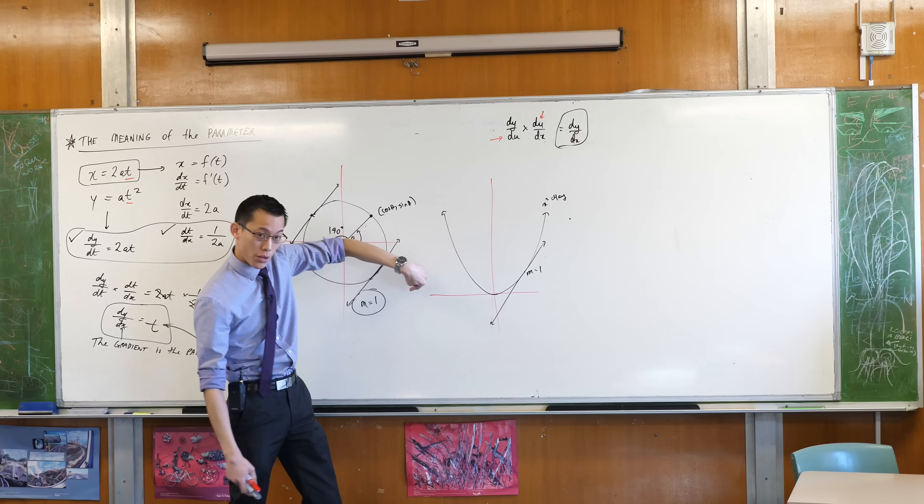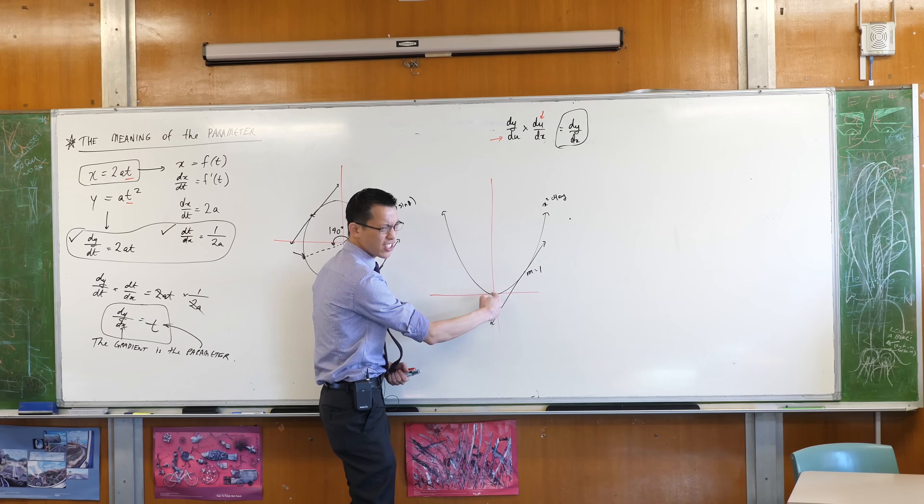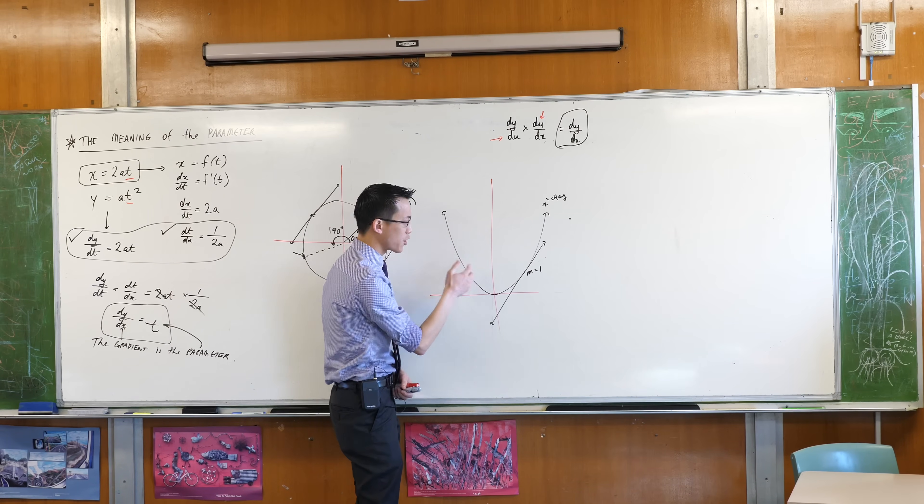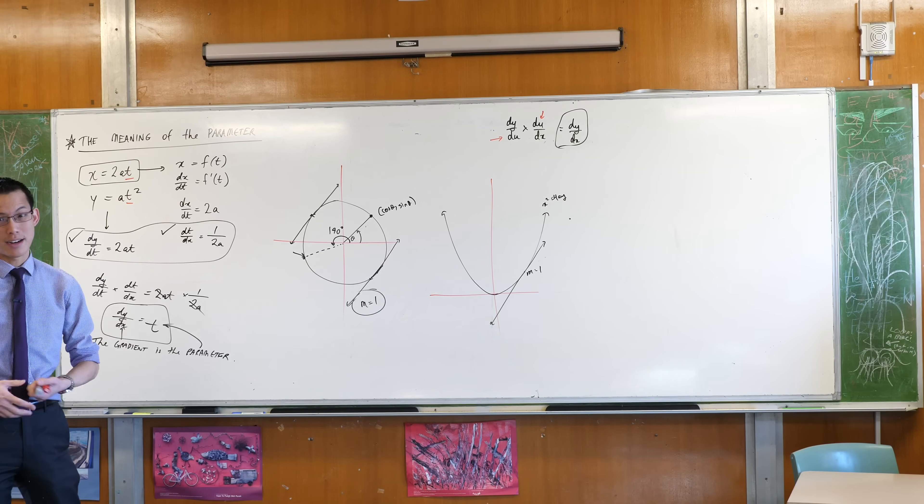Likewise, when you come to the left, go in the opposite direction, the gradient gets smaller and smaller, and then it just goes negative. The gradient is unique. When you find a spot on the parabola, there's only one spot that shares the same gradient.